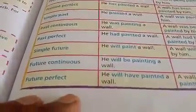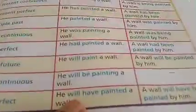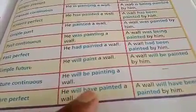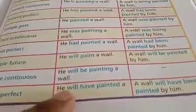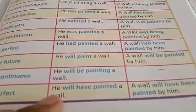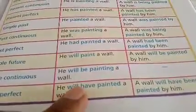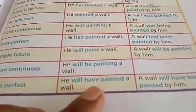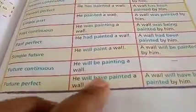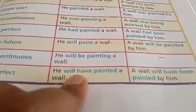For future perfect tense: 'He will have painted a wall.' In future perfect, the helping verb is 'will have' or 'shall have.' When you convert it into passive voice, 'a wall' takes the place of the subject, and the helping verb used is 'will have been.' So the passive form is: 'A wall will have been painted by him.'